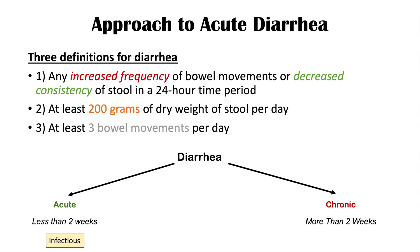Why do we make this distinction? With acute diarrhea — something new going on for less than two weeks — it's more often caused by an infectious cause: a bacteria, a virus, or a protozoa. With chronic diarrhea lasting more than two weeks, it's more likely to be a chronic medical condition like Crohn's, ulcerative colitis, or irritable bowel syndrome. However, these categories aren't perfect — an infectious cause can sometimes last more than two weeks, and a chronic condition like Crohn's can present acutely.